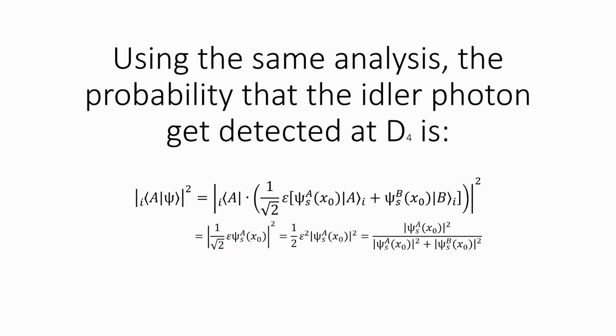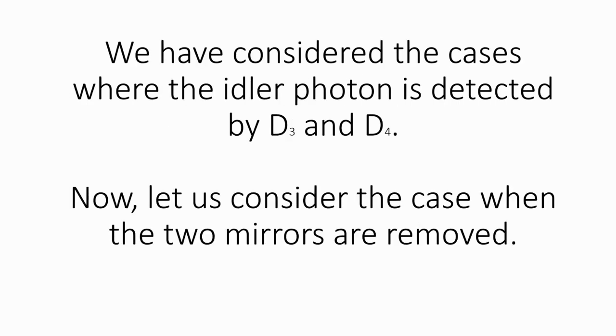Using the same analysis, the probability that the idler photon get detected at D4 is... Now, we have considered the cases where the idler photon get detected at D3 and D4.